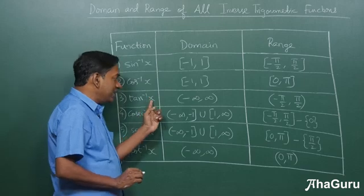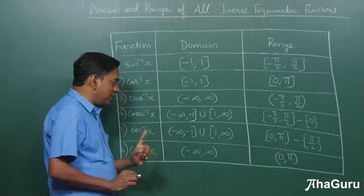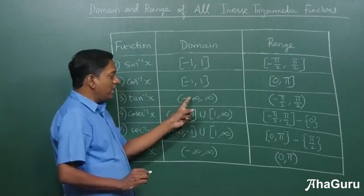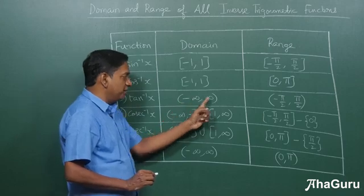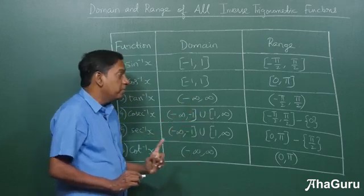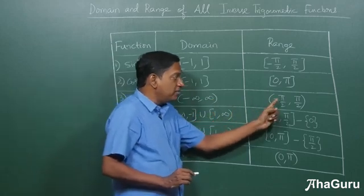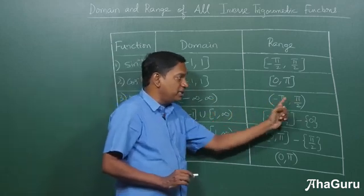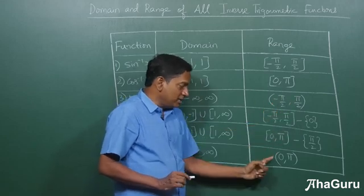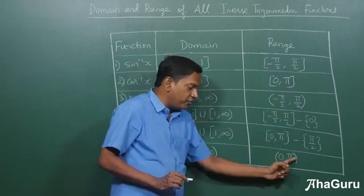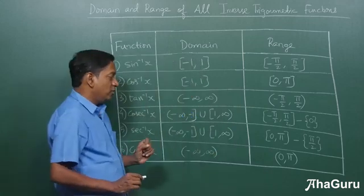Now, if we take tan inverse as well as cot inverse, the domains are all real numbers. That means minus infinity to infinity, but the range is again open interval minus pi by 2 to pi by 2 for tan. The endpoints are not included. Similarly, open interval 0 to pi for cot inverse.